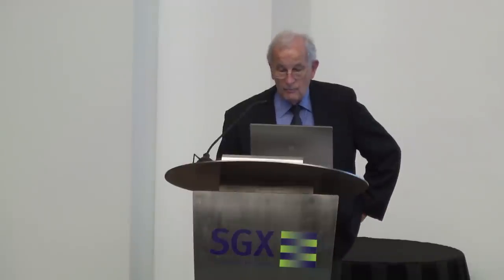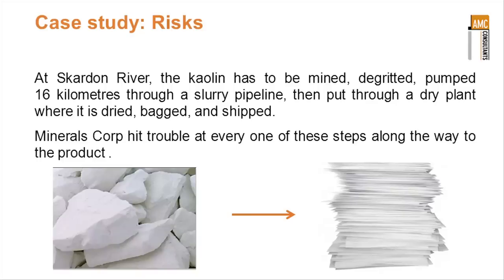So the lesson out of that is to ensure that the product specifications and the processing route meet the market. We've probably got something like $150 million sunk in two small plants there in North Queensland that haven't produced anything of value. The kaolin has to be mined, degraded, pumped 16 kilometres through a slurry pipeline, then put through a dry plant where it is dried, bagged, and shipped. And Minerals Corporation hit trouble at each one of those steps along the way.